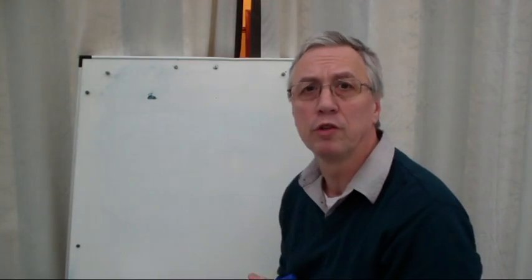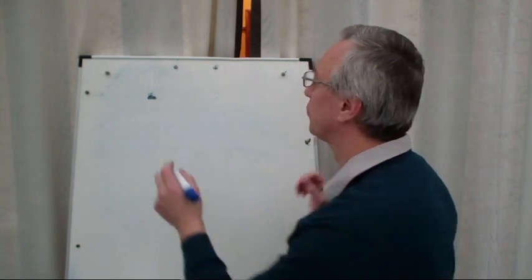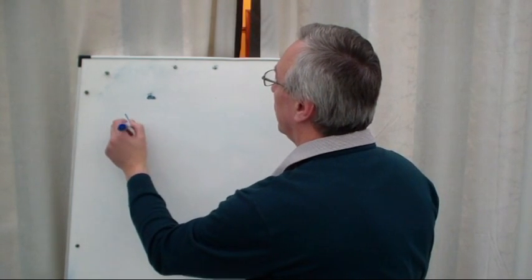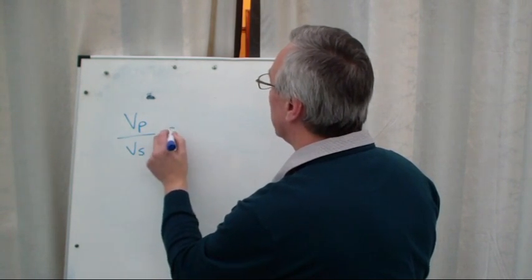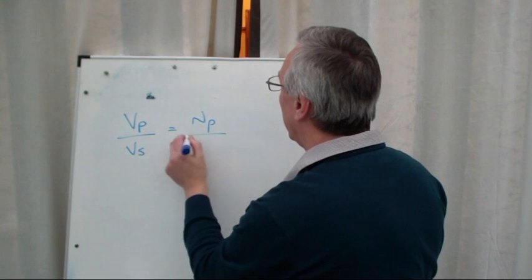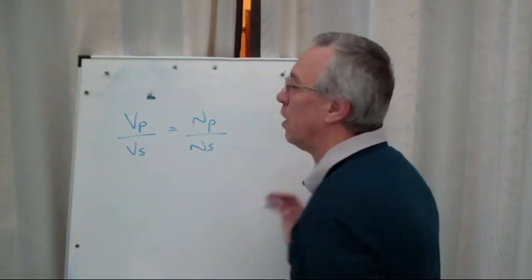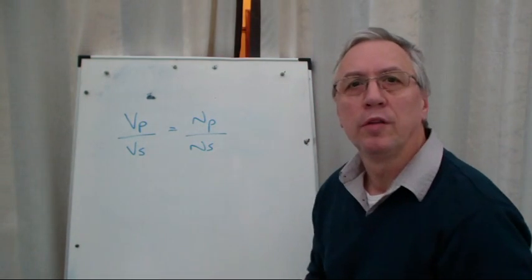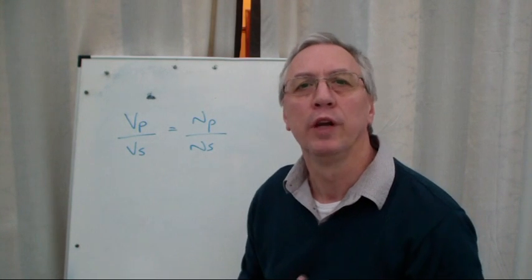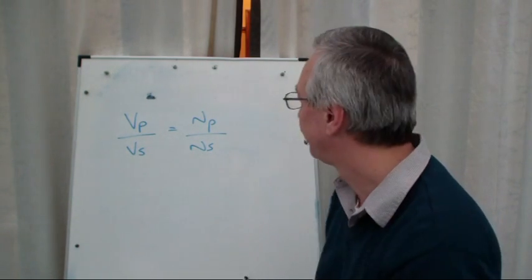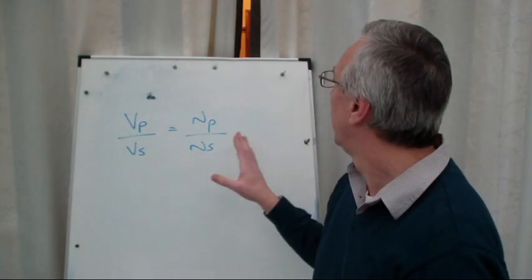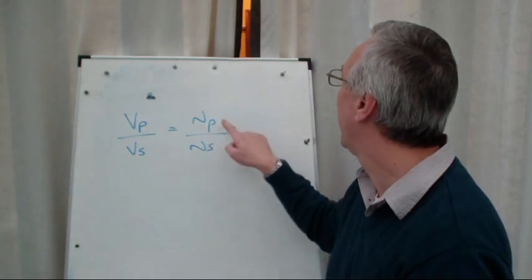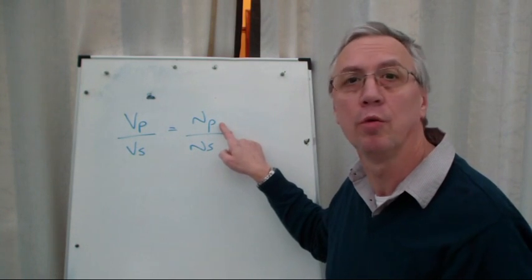My final formula just for this short video is going to be the transformer formula. VP over VS equals NP over NS. This is a formula that people find a little bit tricky to rearrange to try and find the value. So let's just have a brief look at this now. If we wanted to find, let's say, NP on its own.